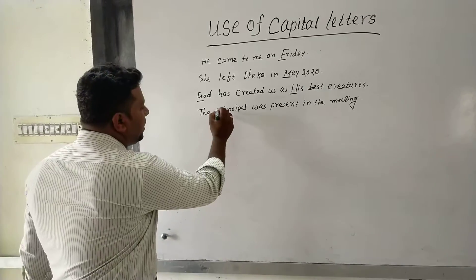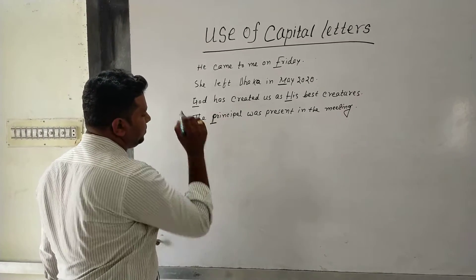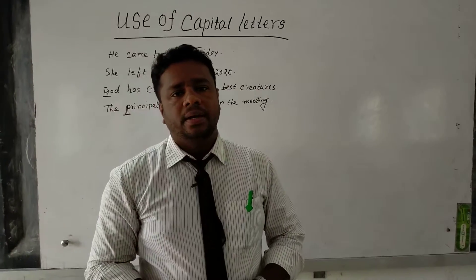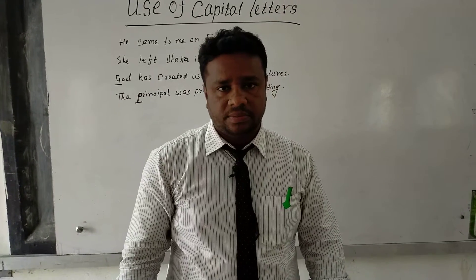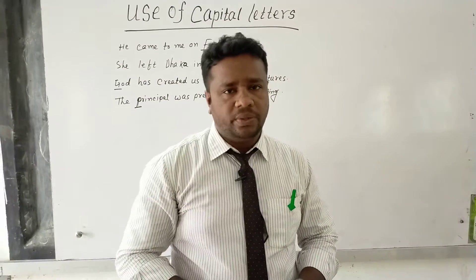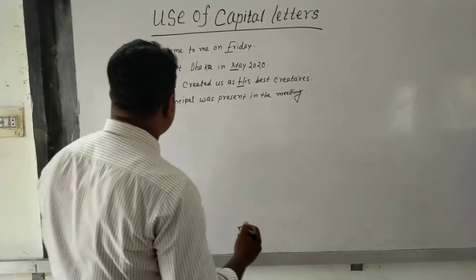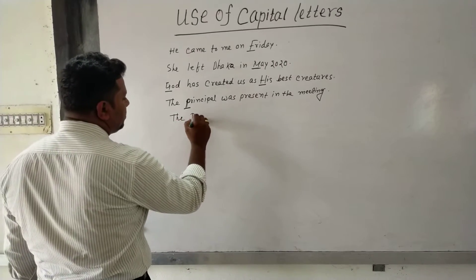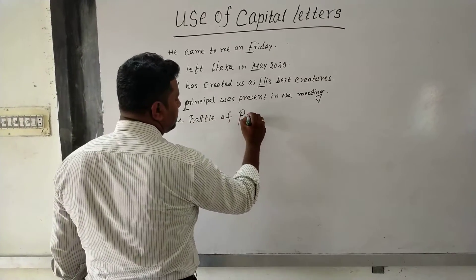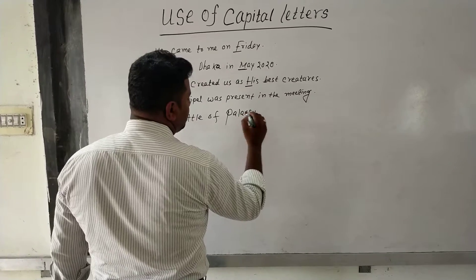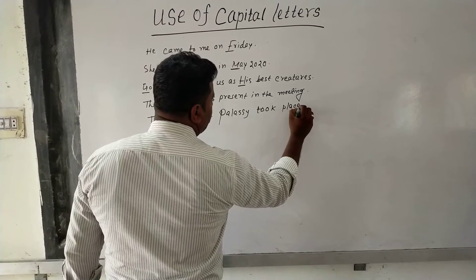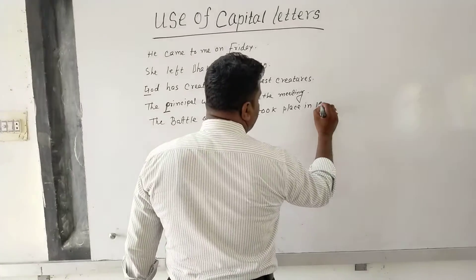Rule eight: capital letters are used to mention the names of important historical events. For example, 'The Battle of Palasi took place in 1757.'